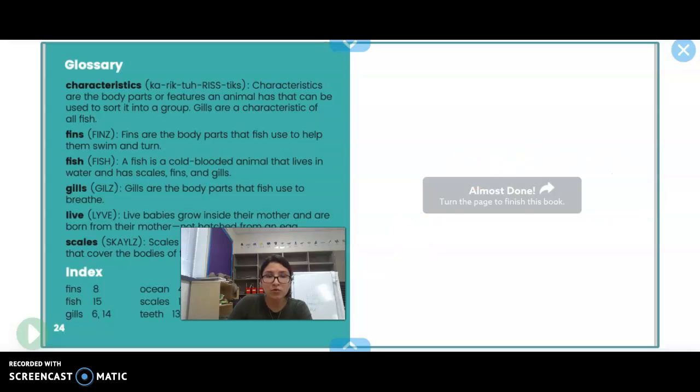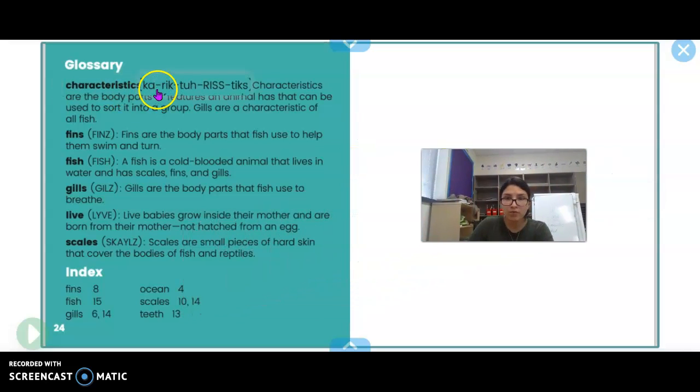What I want to show you is I told you that sometimes those bold text will be at the end of a book in the glossary. So remember we saw fins and we saw gills, and I told you in the glossary, it'll tell you what those words mean. So fins. Fins are the body parts that fish use to help them swim and turn. Gills. Gills are the body parts that fish use to breathe. So remember, most of the time when you see those bold text or bold words, they'll be at the end of the book in the glossary. And if you want to know what those words mean, just go to the glossary and look up those words.